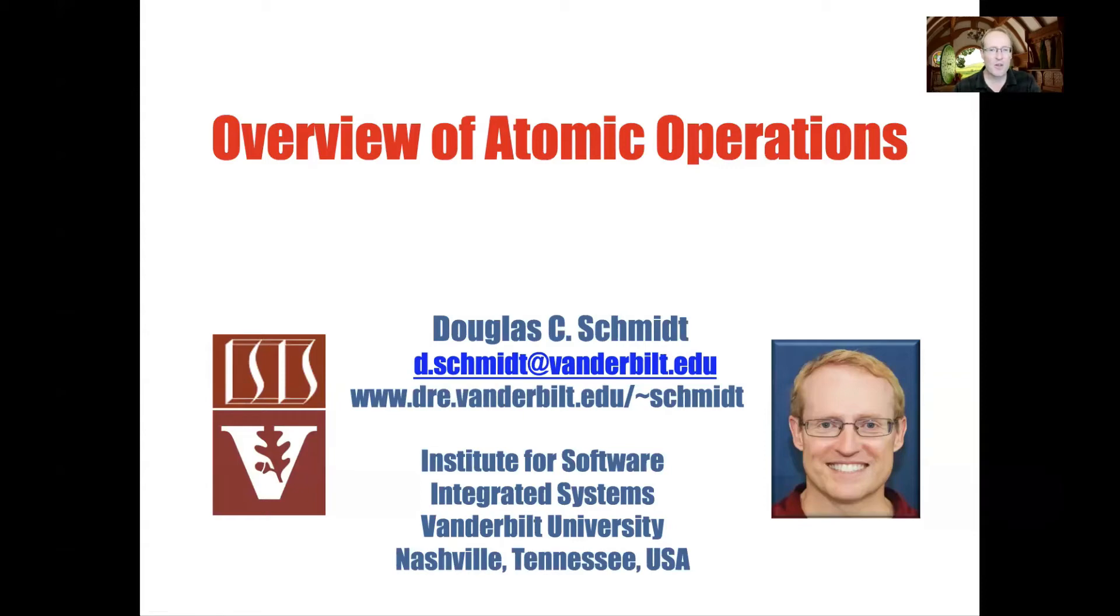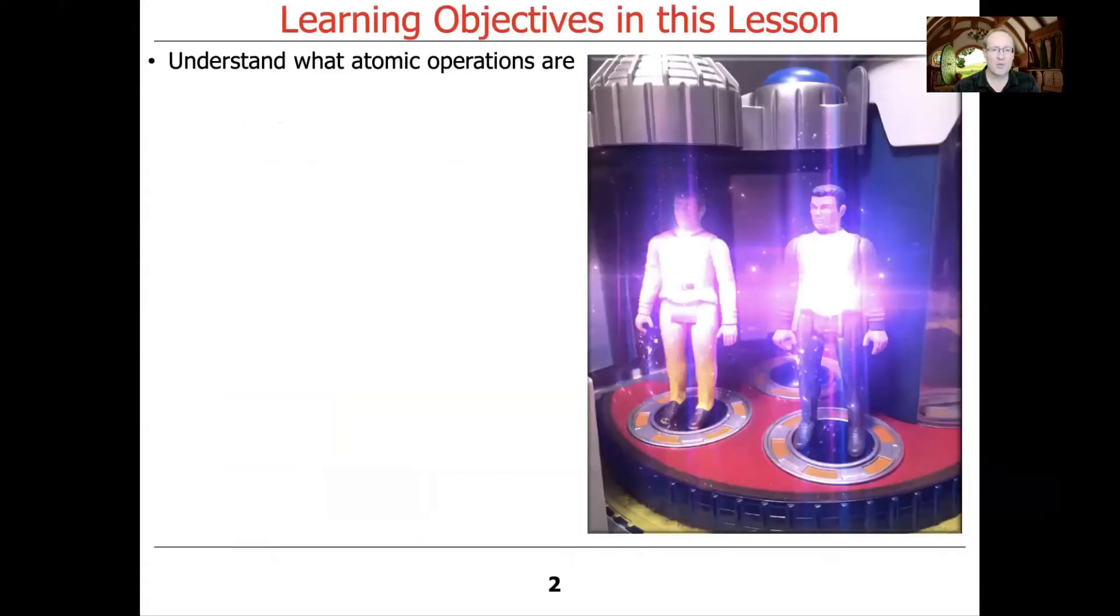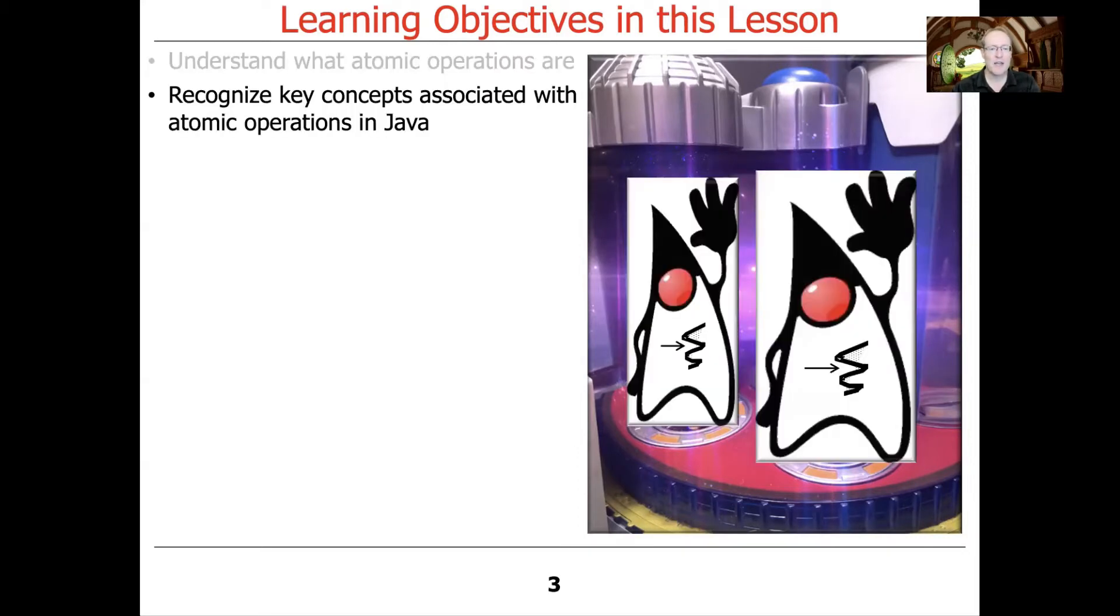So now that we've finished with our overview of Java synchronizers in general, it's time to start delving deeper into some of the most basic synchronizers, which are the atomic operations. We'll first start by recapping what an atomic operation is. I gave you an overview earlier, but now that we're really going to talk about these in earnest, we'll go into a little bit more detail and show some more examples. And we'll talk about some of the key concepts associated with atomic operations in Java.